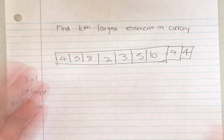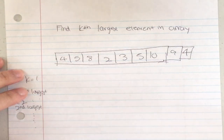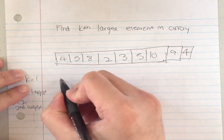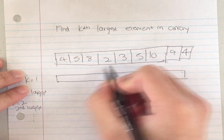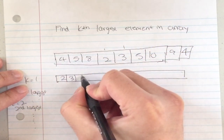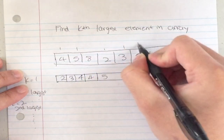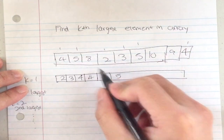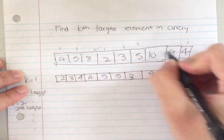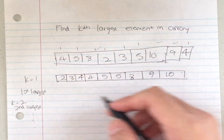The easiest way to solve this is to sort the array first. If I sort my array, I get: two, three, four, four, five, five, eight, nine, ten.